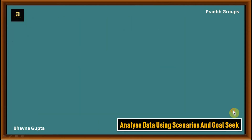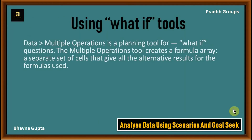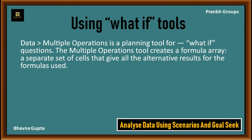Next topic: using what-if tools — Data Multiple Operation. Multiple Operation is a planning tool for what-if questions. It creates a formula array, a separate set of cells that give all the alternative results for the formulas used. To use the Multiple Operation tool, you need two arrays of cells. The first array contains the original default values and the formulas applied to them. The second array is the formula array, created by entering variable alternative values for one or two of the original values. Once the variable values are created, you use the Multiple Operation tool to specify the formulas and the original values altered by the variables.